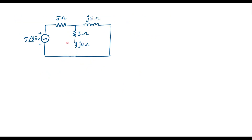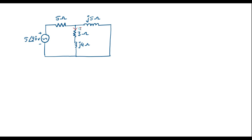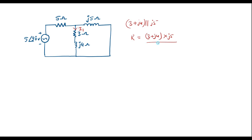So the circuit looks like this. Now I will assume that the current through 3+j4 is I1. Here, 3+j4 is in parallel with j5. So I will find the equivalent resistance of the circuit. That is, 3+j4 is in parallel with j5. If two resistors are in parallel, the equivalent value is the product of the two divided by the sum of the two. That is, R = (3+j4)(j5) / (3+j4+j5).